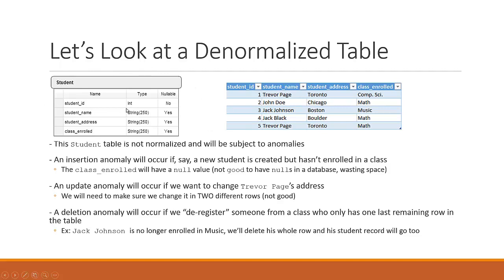We have a primary key here of student ID, and then we have student name, student address, and the class that the student is enrolled in. We have some example data here that shows what the table would look like. So we have our student ID, name, address, and class they are enrolled in — Trevor Page, John Doe, Jack Johnson. In the student address, I just abbreviate it to be just the city for now. We'll be expanding on this later, along with the actual class that they are enrolled in.